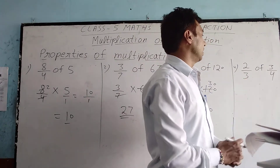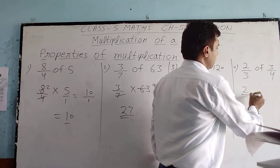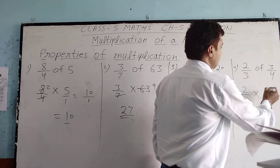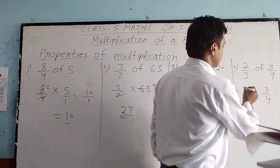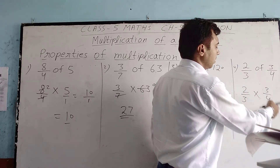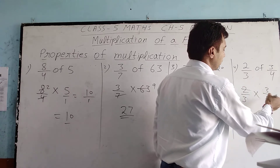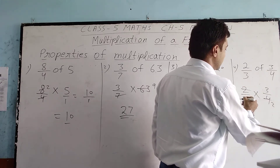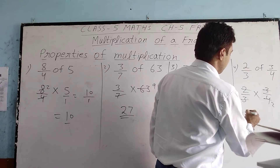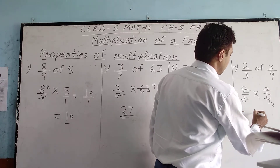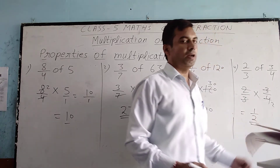Next question: 2 by 3 of 3 by 4. This becomes 2 by 3 multiplied by 3 by 4. We can cut: 3 in the numerator cancels with 3 in the denominator, and 2 cancels with 4 leaving 2. The product is 1 by 2. That is our answer.